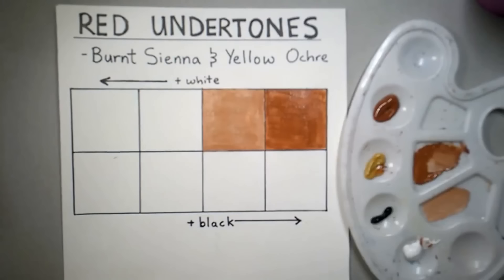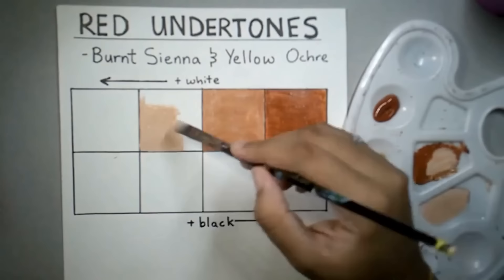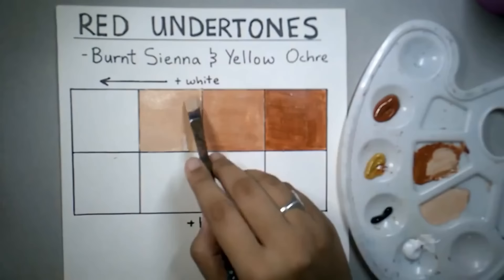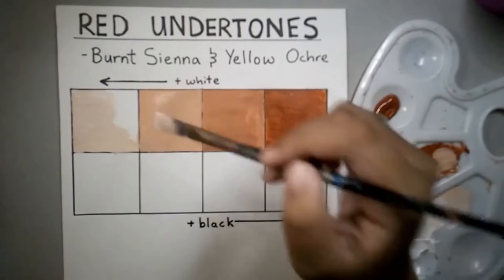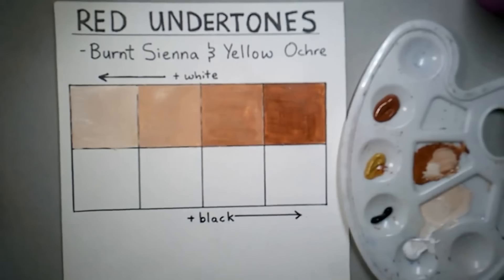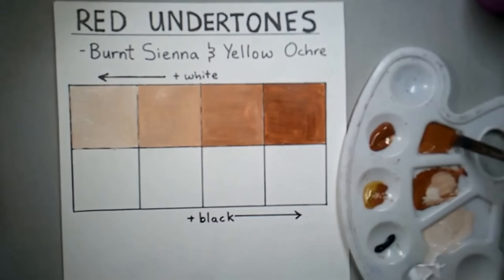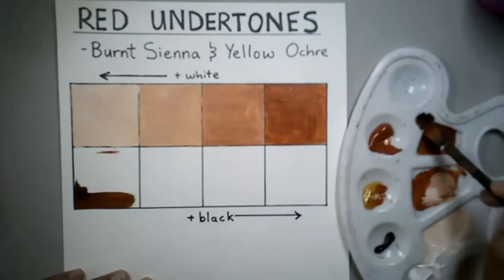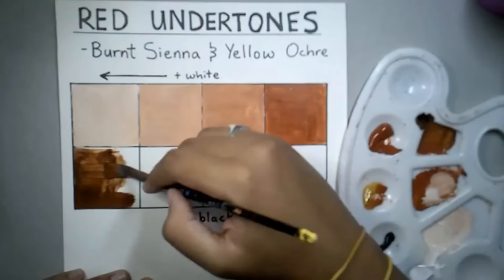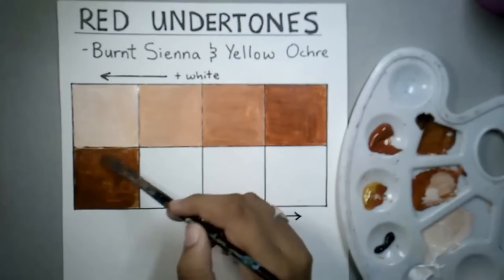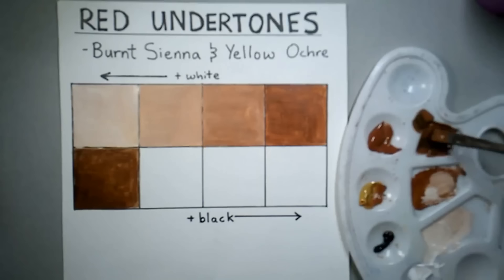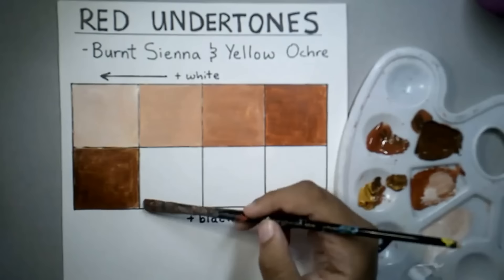Red undertones is the most common undertone. You'll find it in a lot of races — that includes white, Hispanic, Indian, Middle Eastern, Asian people with a darker skin tone, and black people born in the Western Hemisphere, including Caribbean people and African Americans. They usually have red undertones, whereas Africans born in Africa have blue undertones. You don't have to know the exact racial background of the person you're painting — this is just a guideline, especially if you're not using a reference picture and are conceptualizing a character.